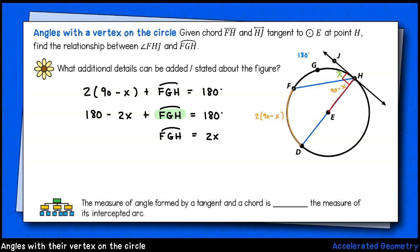Hey, that seems familiar. The intercepted arc is twice the measure of angle X. I could solve instead for angle X. In that case, I'd get one half of arc FGH equals angle X. Hey, this is the same as the inscribed angle theorem.